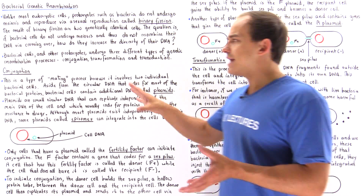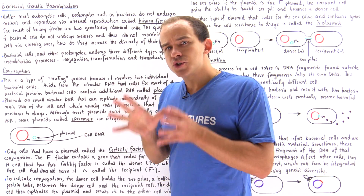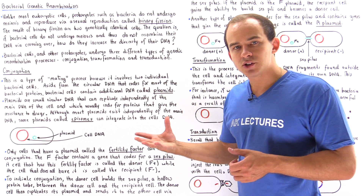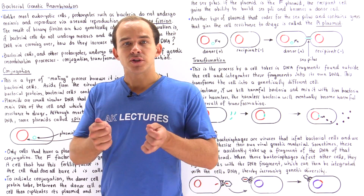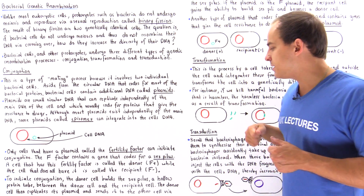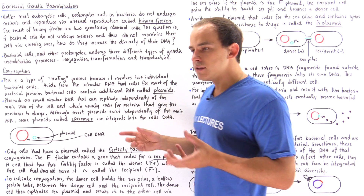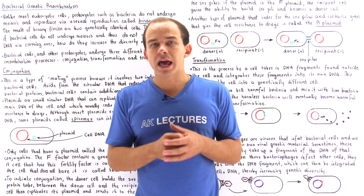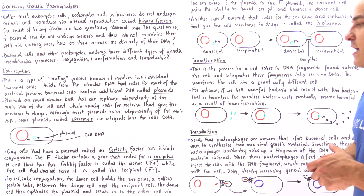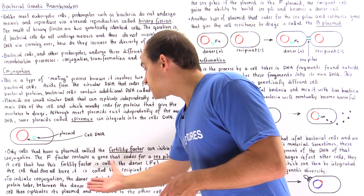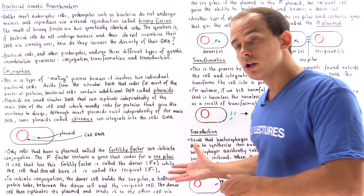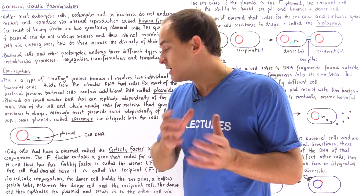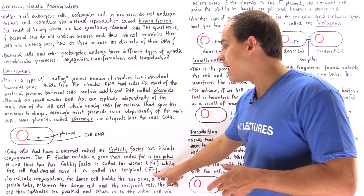Plasmids are small circular DNA molecules that replicate independently of the main DNA and carry genes coding for drug-resistance proteins. Some plasmids can incorporate into the main DNA molecule and are known as episomes. Certain cells contain special plasmids called the fertility factor, or F-factor, which code for proteins that build the sex pilus — the cytoplasmic bridge connecting two cells. A cell containing the F-factor is called an F-plus, or donor cell, while a cell lacking it is the F-minus, or recipient cell.